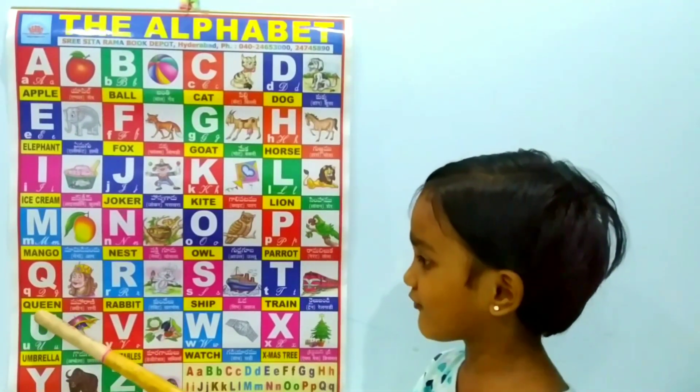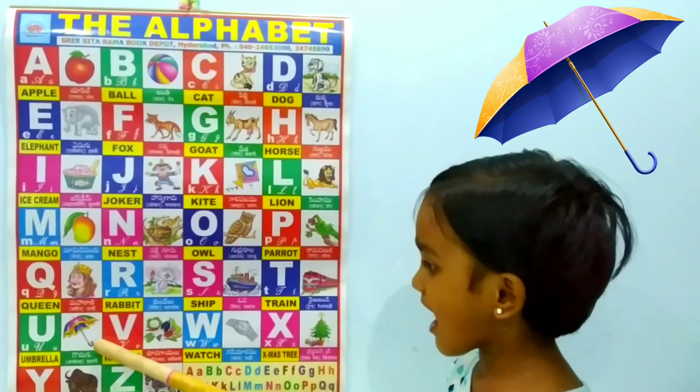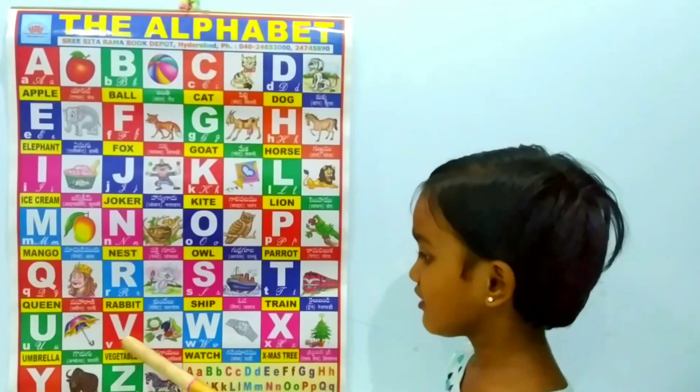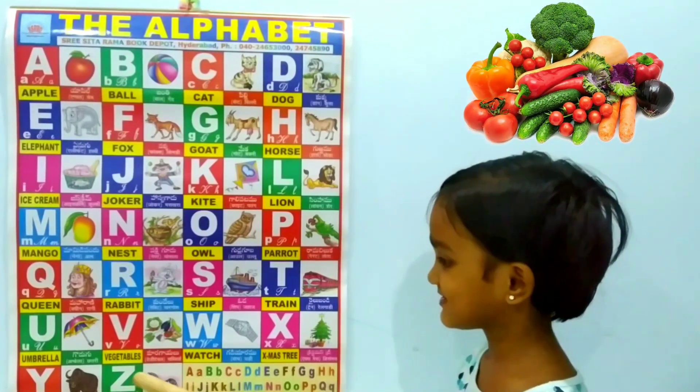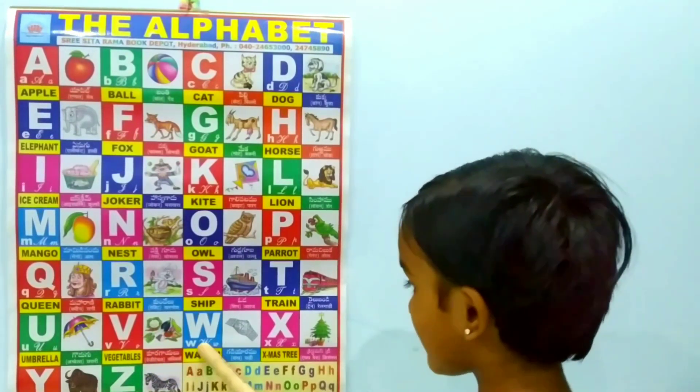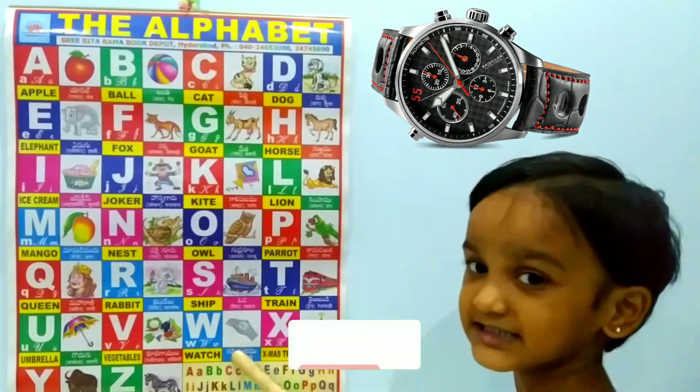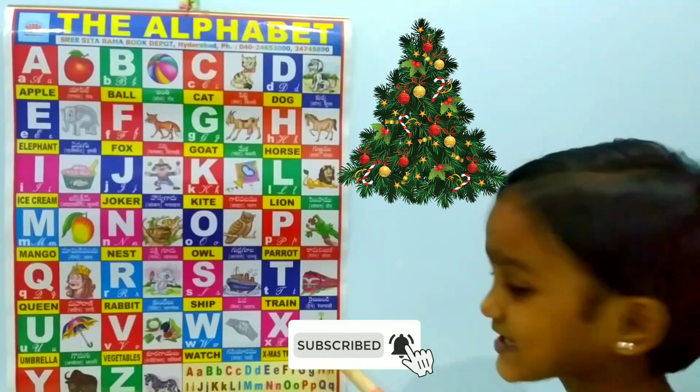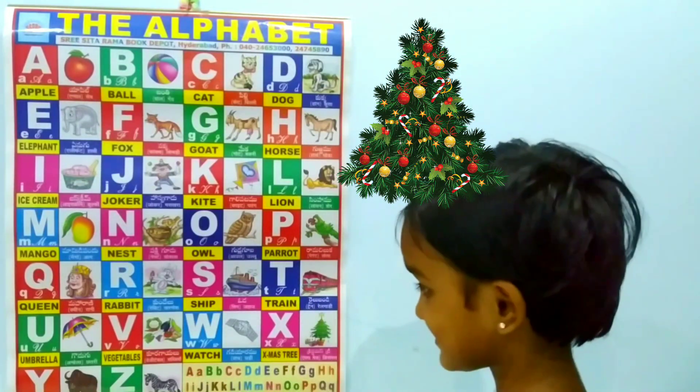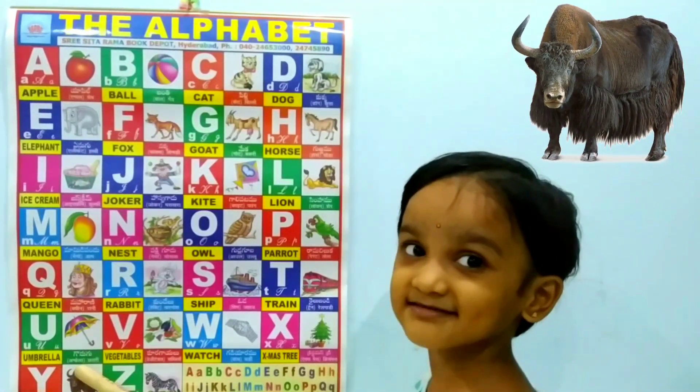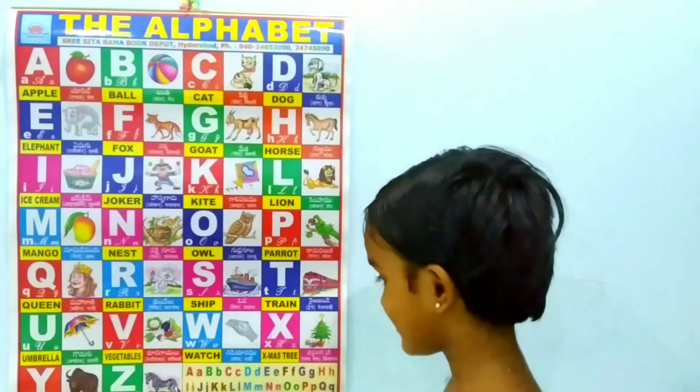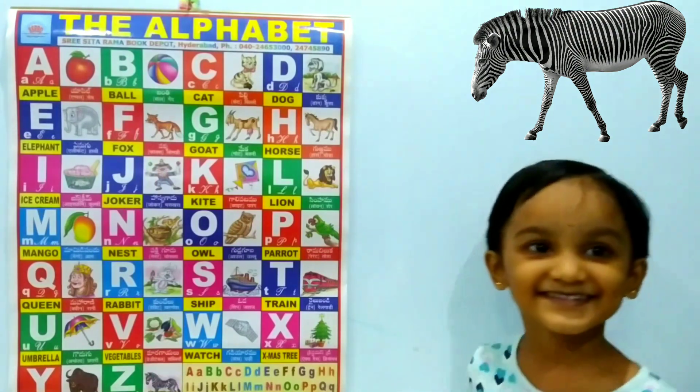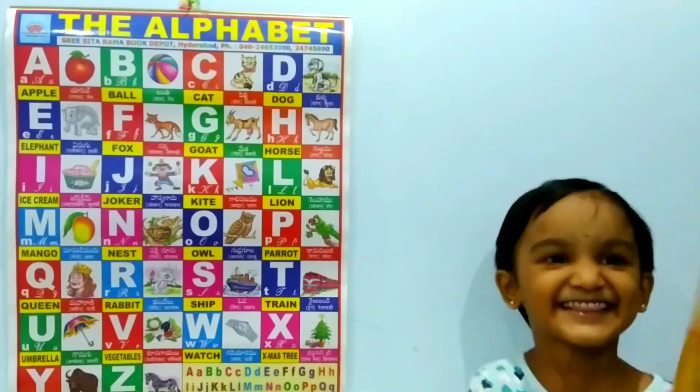U for Umbrella, V for Vegetables, W for Watch, X for Christmas Tree, Y for Yaak, Z for Zebra. Yeay!